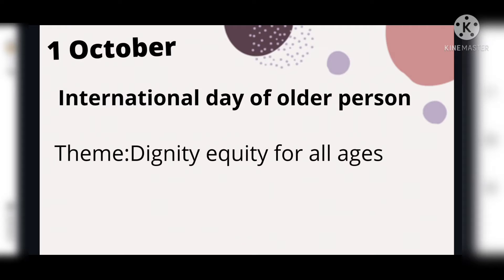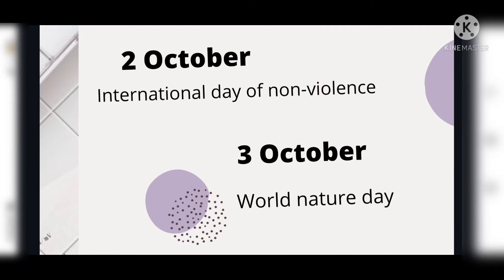In the starting of the month we celebrate International Day of Older Persons, and the theme of this year was 'Dignity and Equity for All Ages.' Then we celebrate International Day of Non-Violence on 2nd of October, and then World Nature Day on 3rd of October.